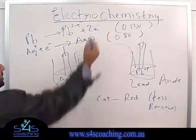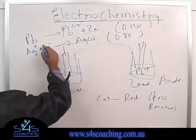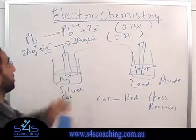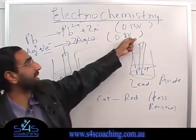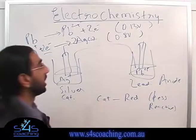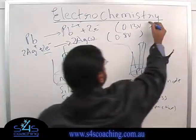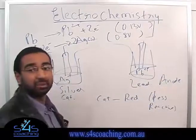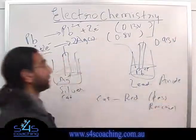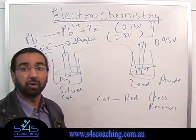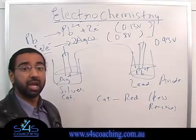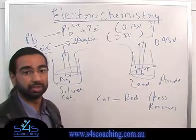If the Pb side is giving away two electrons, I need to double the Ag half-equation so it also takes in two electrons. But just because I've doubled it, the voltage number still remains exactly the same. To find the cell voltage, I just add these two numbers together. A quick tip: the cell voltage needs to be positive, because if it's negative, it's not going to produce electricity — it's going to consume electricity.